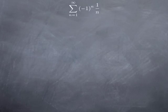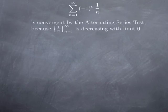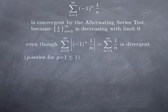Let's consider the alternating series of (-1)^n multiplied by 1/n. It's convergent by the alternating series test because the sequence of absolute values of the general term 1/n is decreasing with limit 0. However, the series of absolute values of the terms is the series of 1/n, which is a divergent p-series. So the series is convergent but the series of absolute values of its terms is not.